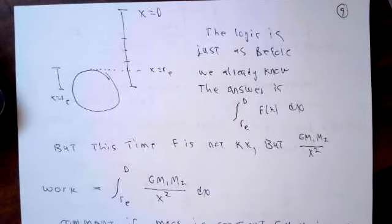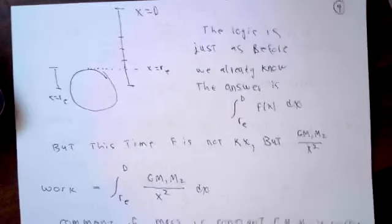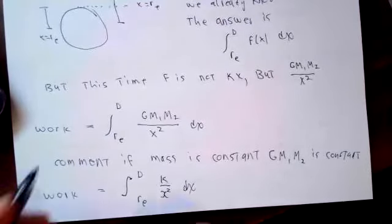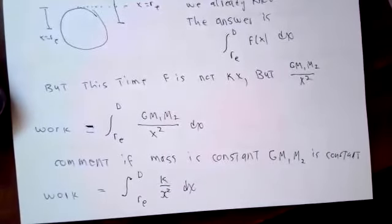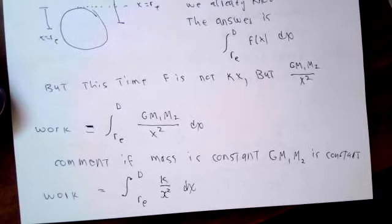This time, the force is not the spring force, though, but the gravity force, GM1M2 over x squared. So the work is going to be equal to the integral from r sub e to D, GM1M2 over x squared with respect to x. If we assume that the masses are constants, then GM1M2 is a constant also. I might as well call it k, and then the work is going to equal the integral of k over x squared with respect to x. This is extremely similar to the spring problem, except we're using the gravity force and not the spring force.